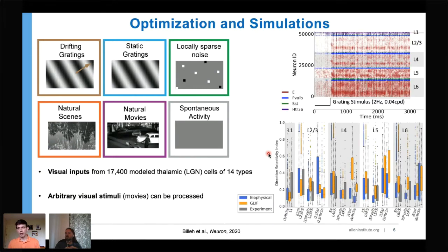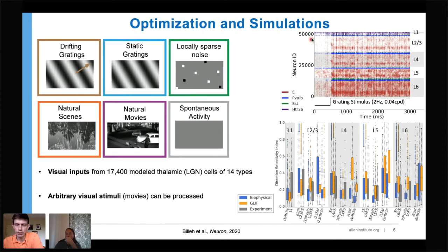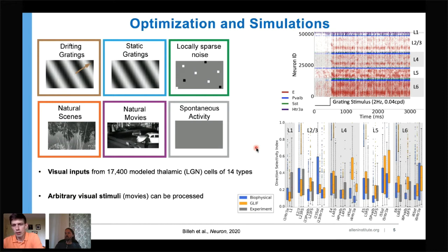We ran simulations with a number of different visual stimuli and compared with experiment. For example, turning on a grating stimulus at 500 milliseconds and running for 3000 milliseconds, showing activity of 50,000 neurons in the center. We compute distributions of different characteristics for different stimuli; one example is the direction selectivity index — how directionally selective neurons are — comparing different cell types from experiment in gray with the biophysical and point neuron model versions.